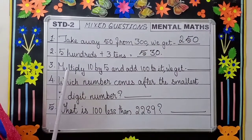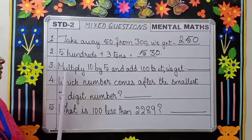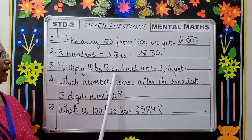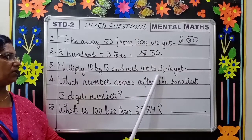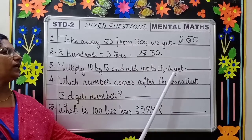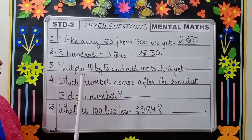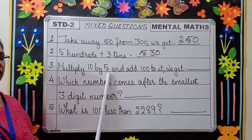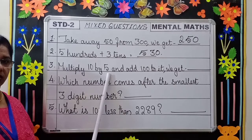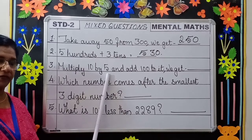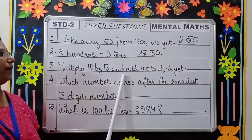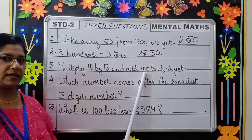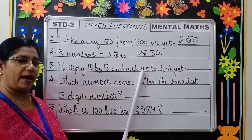Next question, question number three: multiply 10 by 5 and add 100 to it — we get dash. First you have to multiply 10 by 5. Five tens are 50. And add 100 to 50 — you will get 150.